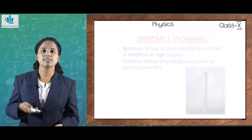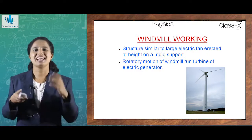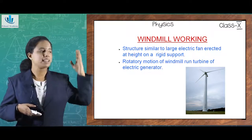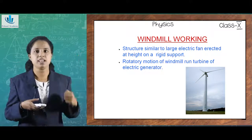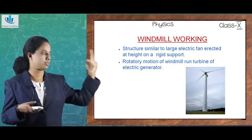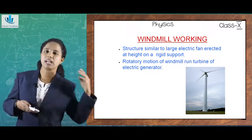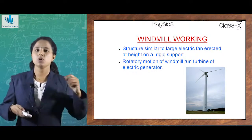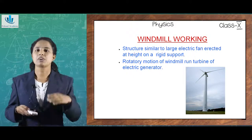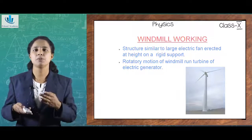A windmill has a structure similar to a large fan, erected at a height with a rigid support and blades — here three blades. The rotatory motion of the windmill runs the turbines of the electric generator connected to it. When wind moves and rotates the windmill, it runs the turbine of the electric generator and finally electricity is produced.